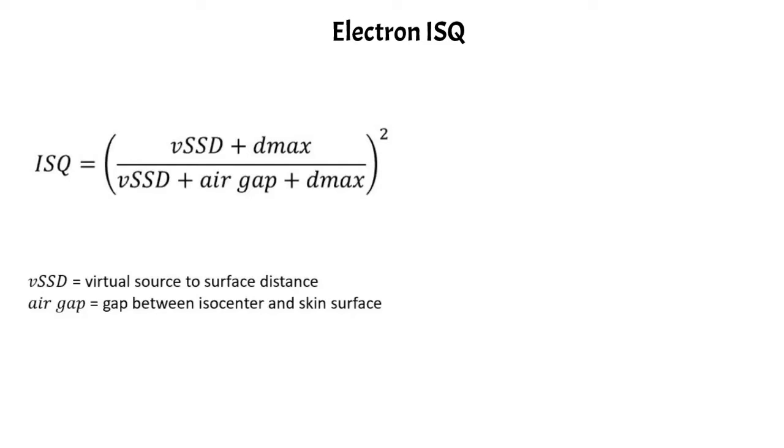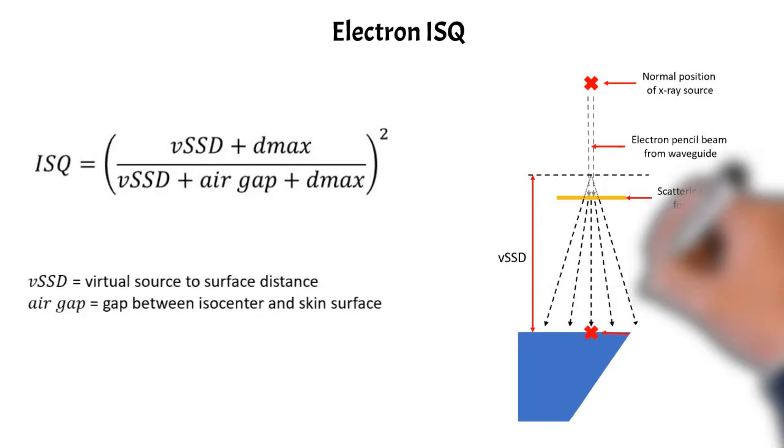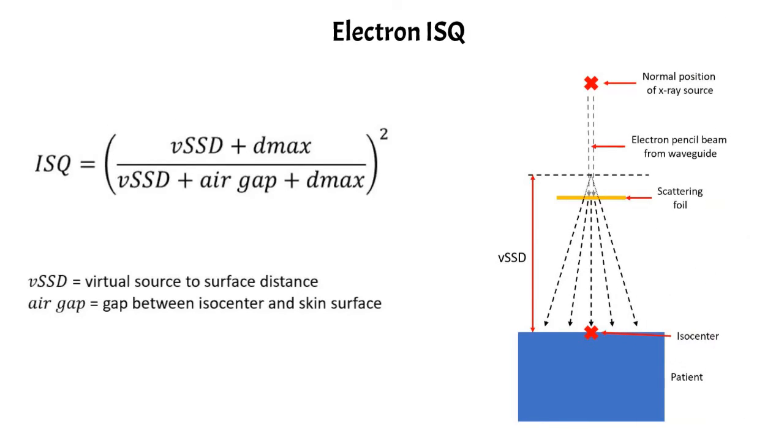And the reason for that is because it comes from the differences in the treatment head when you're in electron mode versus photon mode. And so I'll draw out electron mode here. At the top there, that's normally where your tungsten target would be. So that's where all of the photons are coming from.